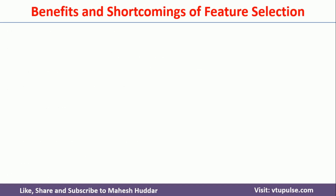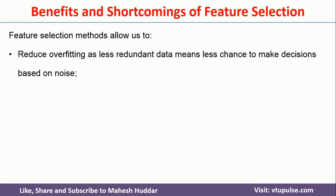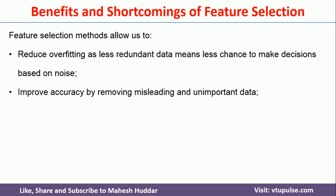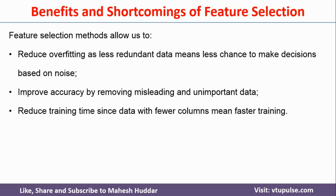Now let us look at the advantages and disadvantages of feature selection. There are many advantages. First, it reduces overfitting because we are not using all features — redundant, noisy, and irrelevant features are removed. Second, it improves the accuracy of the model because misleading and unimportant data is removed from the dataset. Third, it reduces the total time required to train the model, because fewer features means less training time for the machine learning model.